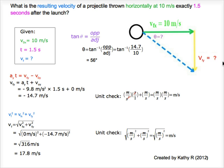To get the final velocity in y direction, we use the kinetics equation shown in red. We substitute the values and get Vfy of negative 14.7 meters per second.